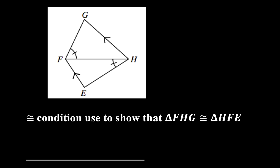Also, this diagram was part of this question. This was part B. And it says, show congruence conditions that you would use to show that triangle FHG is congruent to triangle HFE.